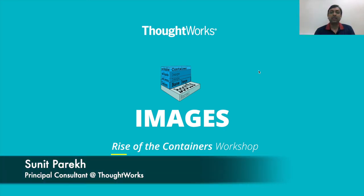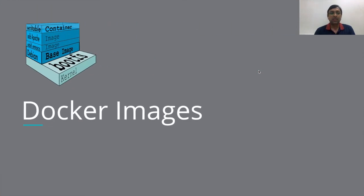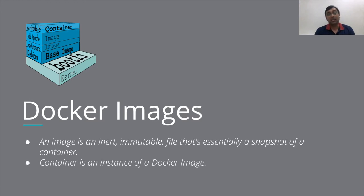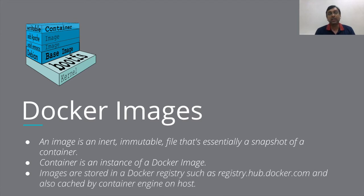To understand Docker we need to understand images in more detail. Docker images are nothing but immutable files — essentially snapshots of a container, similar to VM snapshots. A container is an instance of a Docker image; once you take a snapshot you can run as many containers from it as you want. Images are stored inside a repository called a Docker registry, the classical example being hub.docker.com, and images are also cached on the host machine by the Docker engine.